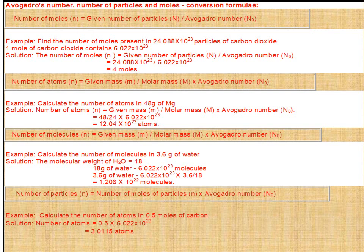Next formula: number of atoms = (given mass m ÷ molar mass M) × Avogadro's number. Example: calculate the number of atoms in 48 grams of magnesium.